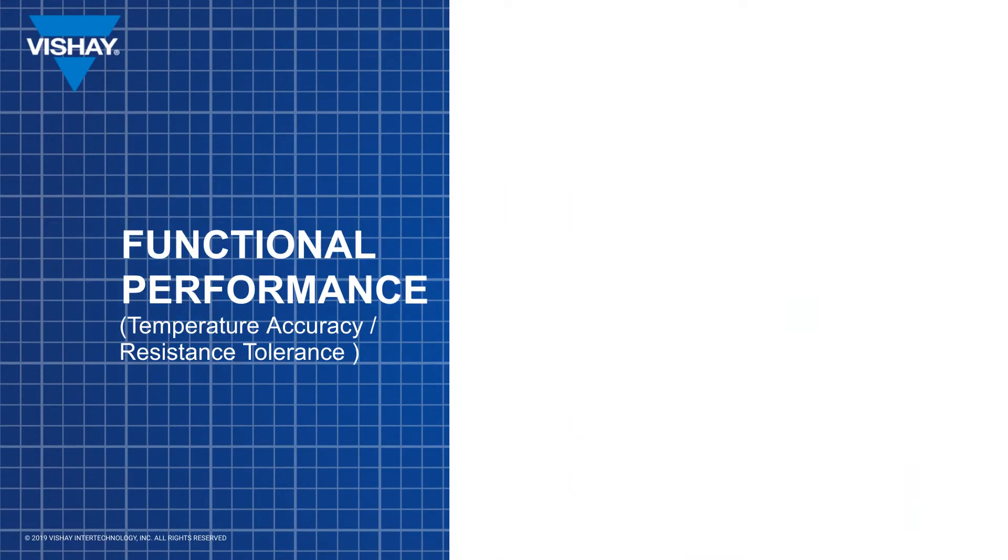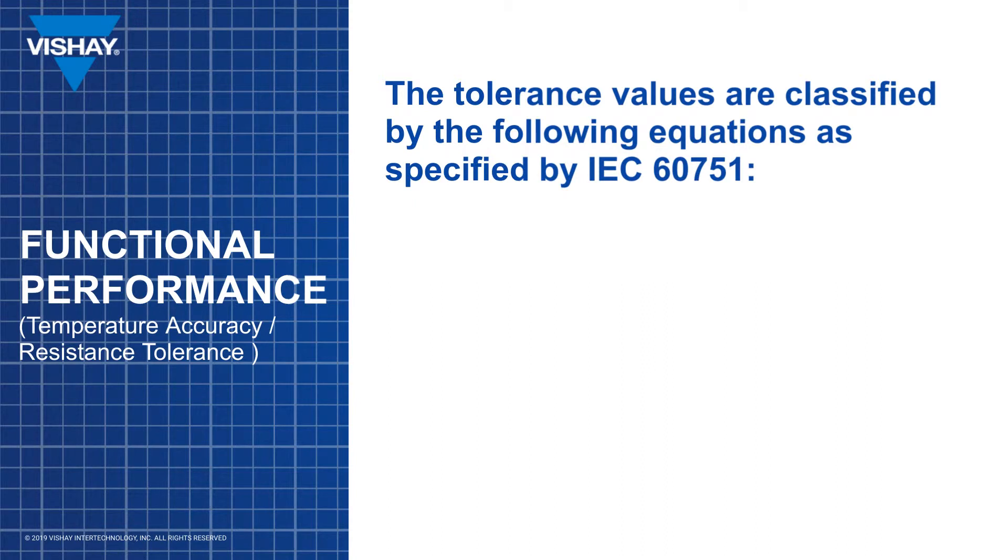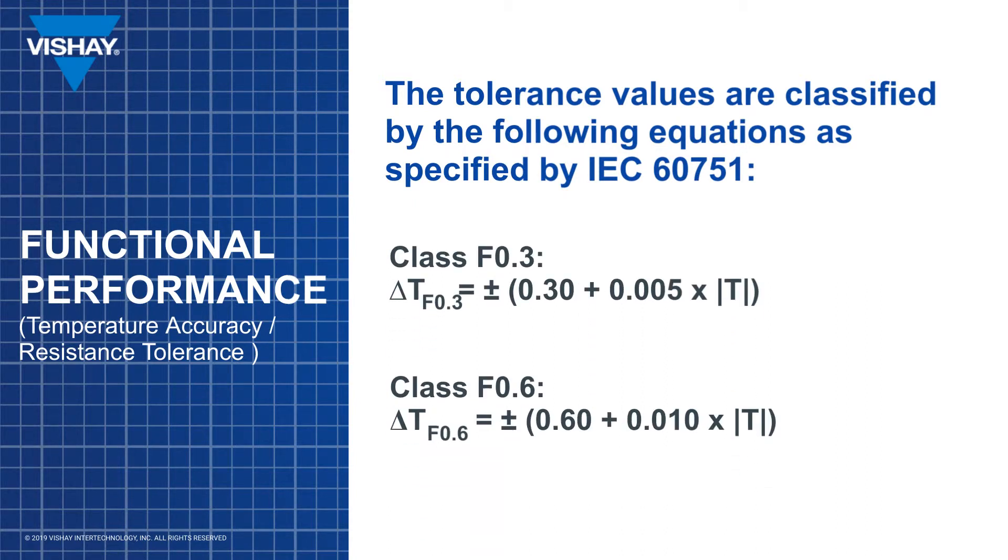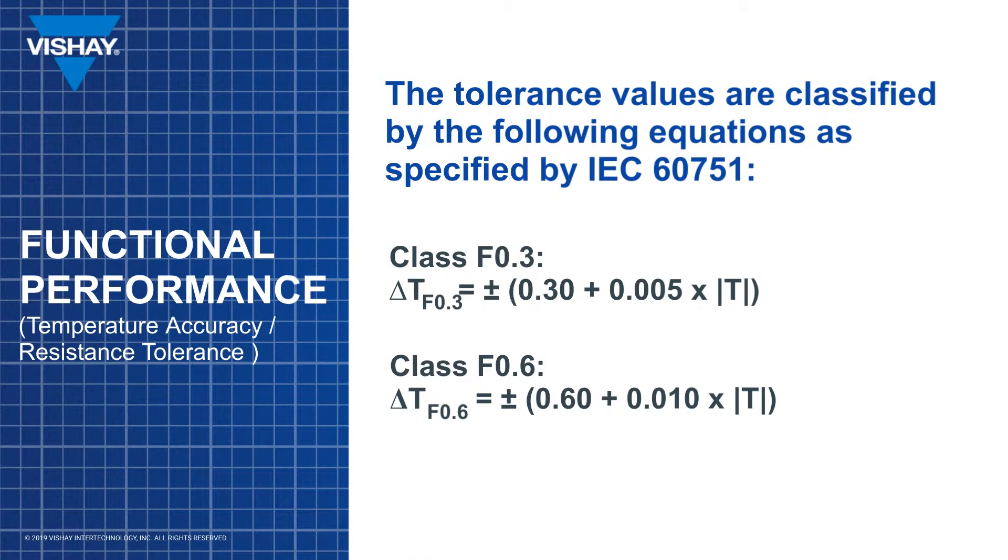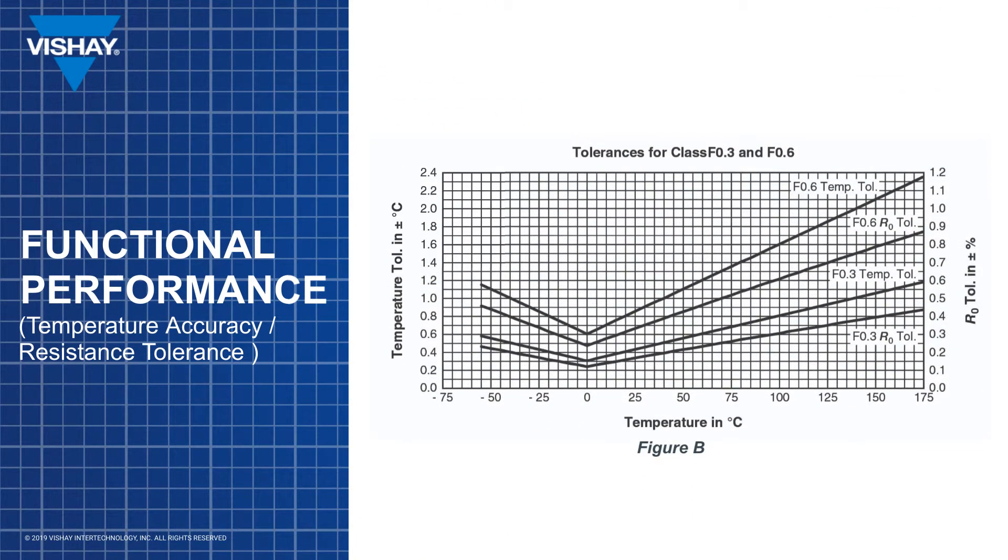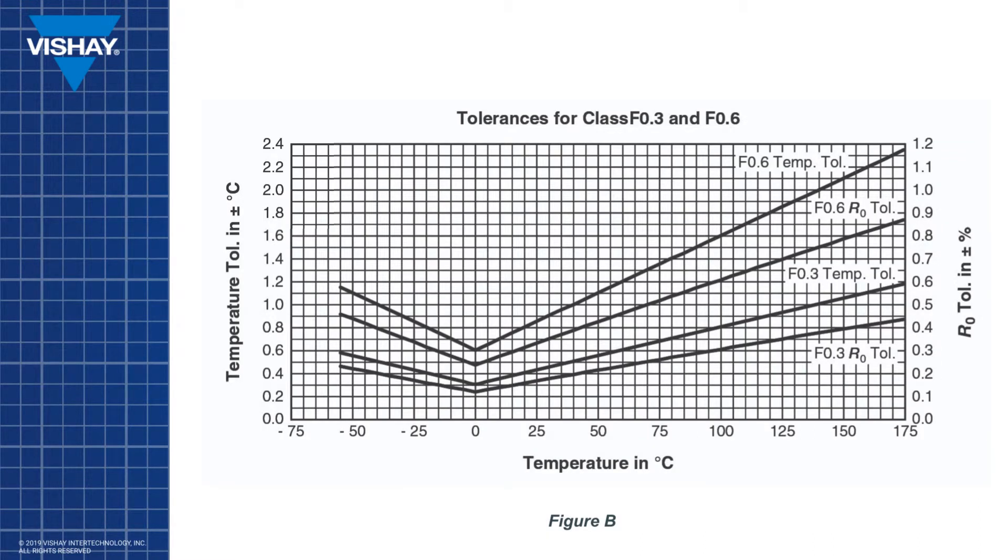The temperature accuracy and reference resistance tolerance offered by the PTS-AT is exceptional for the vast temperature range that it covers. The equations listed above are used to develop the butterfly curves outlining the temperature accuracy at a given temperature point, tolerance class dependent in figure B. As is evident in figure B, the temperature accuracy is no worse than plus or minus 2.4 degrees C for class F0.6 and plus or minus 1.2 degrees C for class F0.3 between minus 55 and plus 175 degrees C.